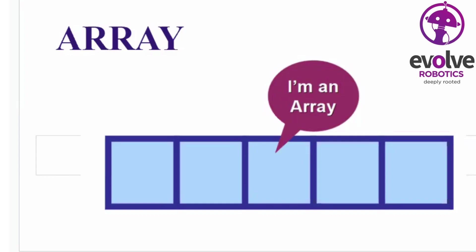Hello everyone. We are going to do an Array concept, and we are going to do a linear search. An Array method is simple — it is a group of elements which have the same data type stored together.